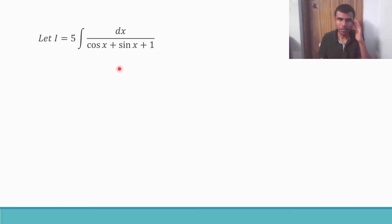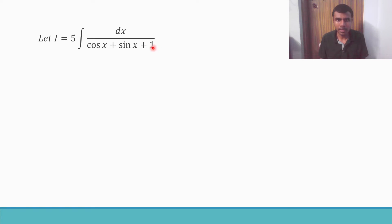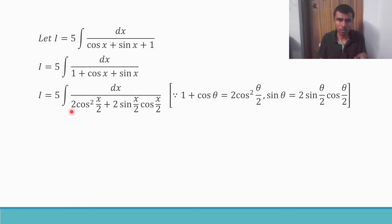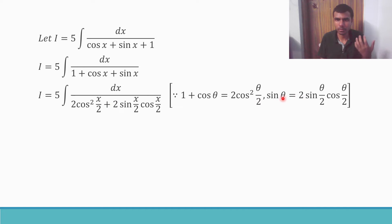Now let us integrate I = 5 integral of dx over (cos x + sin x + 1). Write the denominator as 1 + cos x + sin x. Using trigonometric identities: 1 + cos x = 2 cos²(x/2) and sin x = 2 sin(x/2) cos(x/2). So the denominator becomes 2 cos²(x/2) + 2 sin(x/2) cos(x/2).